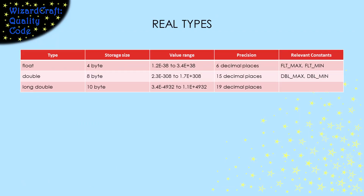Like integers, the types that hold real numbers vary in the number of bits that they hold. However, they are always signed. With more bits comes more range and more precision in your numbers. All of these types conform to the IEEE 754 standard for storing real numbers. You can learn more about that in the video at the top of the screen.